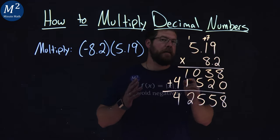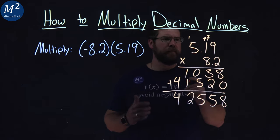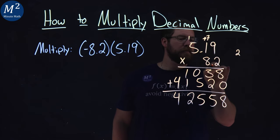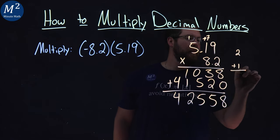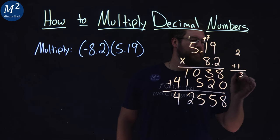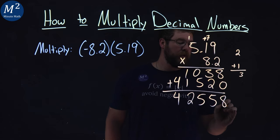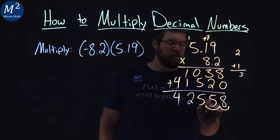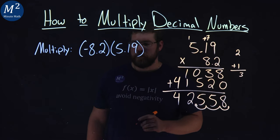The tricky part here is how many decimal places do we need? Well, our first number had 2 places. The second number had 1. We add that together, and we get 3. So we want to move this over 3 decimal places. 1, 2, 3.